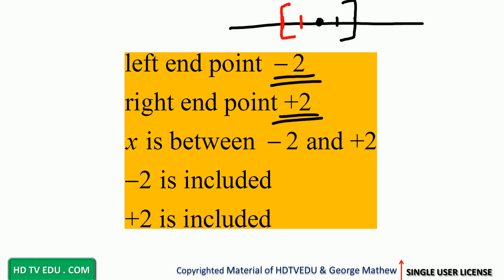The right endpoint is positive two. X is between negative two and positive two. Negative two is included because we have a square bracket. Positive two is also included. So we have negative two less than or equal to x less than or equal to two, because we have square brackets on the left and on the right.